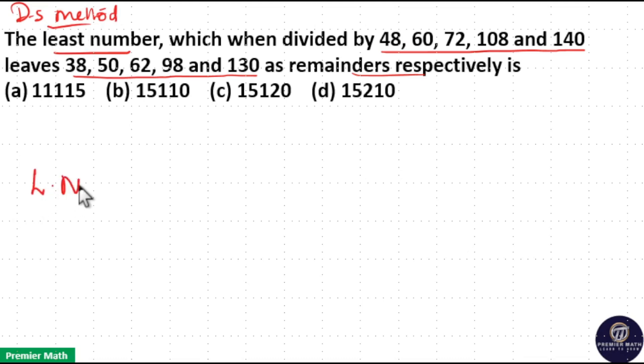Here to find the least number first take the LCM of divisors which is 48, 60, 72, 108 and 140. Now after taking the LCM subtract common remainder from it. That is your number.